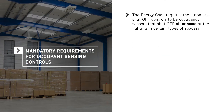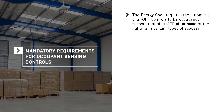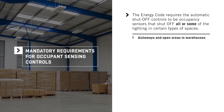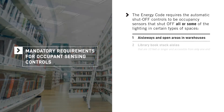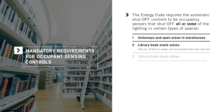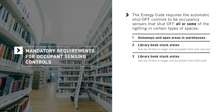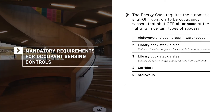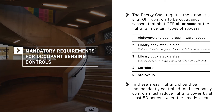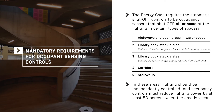The Energy Code also requires automatic shutoff controls to be occupancy sensors that shut off all or some of the lighting in certain types of spaces. These include aisleways and open areas in warehouses; library book stack aisles 10 feet or longer accessible from only one end; library book stack aisles 20 feet or longer accessible from both ends; corridors; and stairwells. In these areas, lighting should be independently controlled and occupancy controls must automatically reduce lighting power by at least 50 percent when the area is vacant.